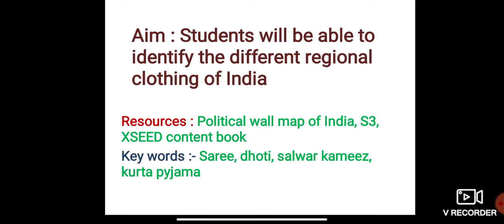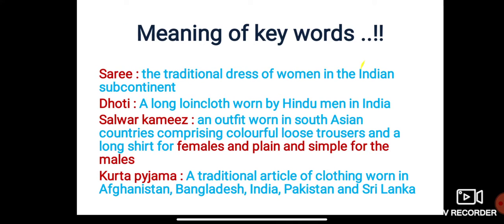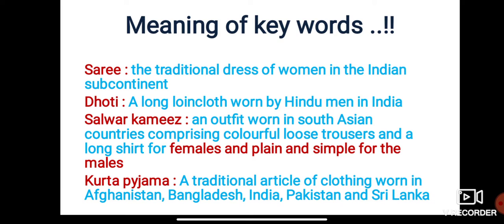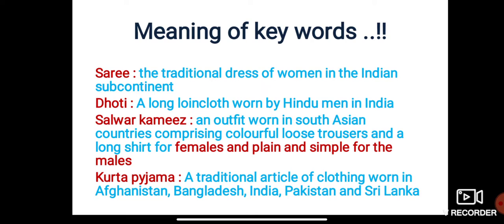All these keywords are names of different clothes. The sari is the traditional dress of women in the Indian subcontinent. The dhoti is a long loin cloth worn by Hindu men in India. Salwar kameez is an outfit worn in South Asia comprising colorful loose trousers and a long shirt — for females it is colorful, for males plain and simple. Kurta pajama is a traditional article of clothing worn in Afghanistan, Bangladesh, India, Pakistan, and Sri Lanka.